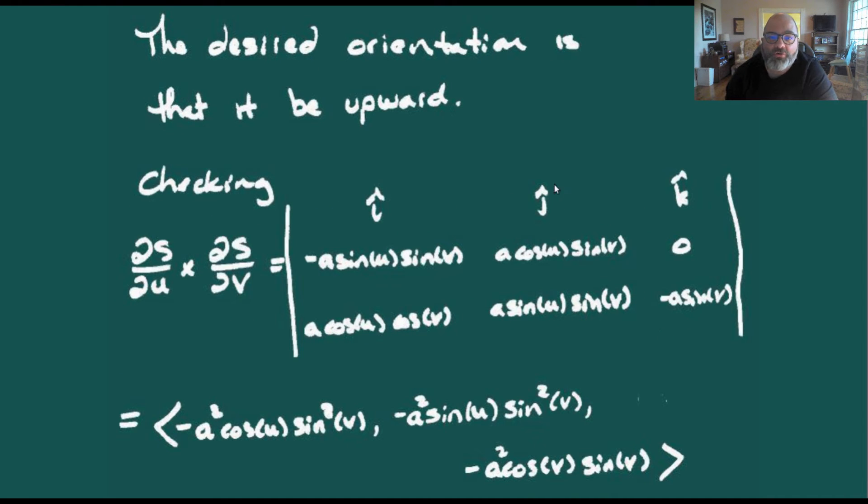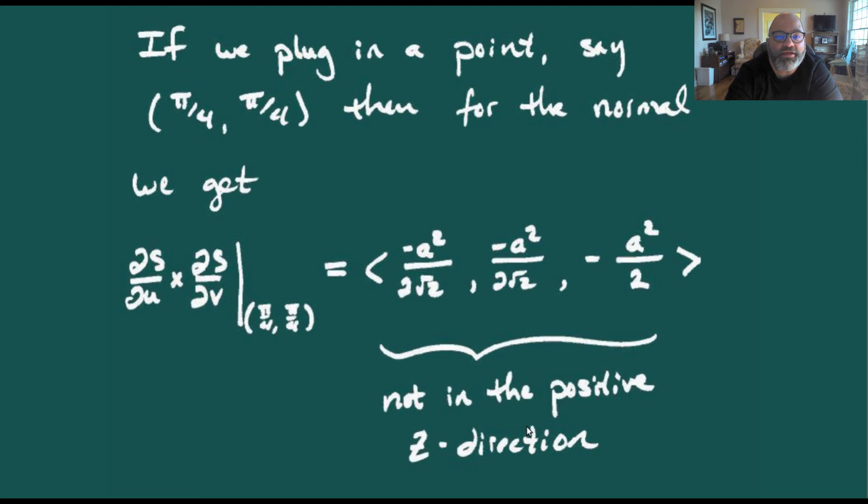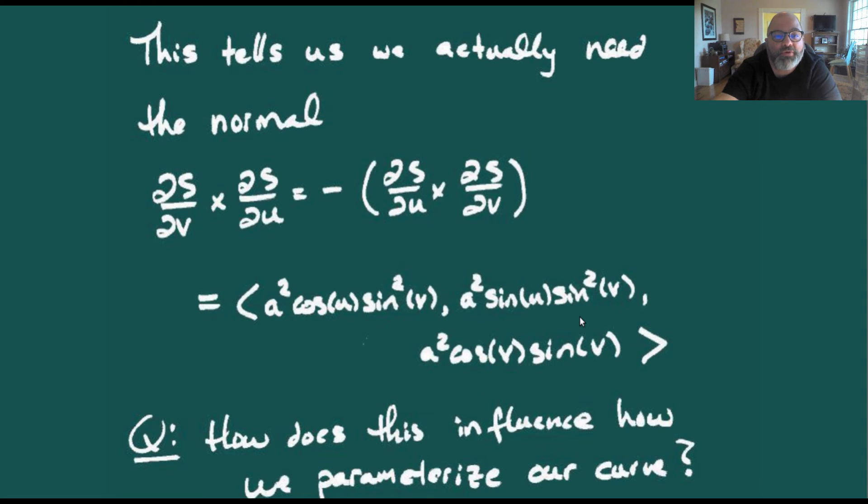We want our orientation to be upward. If we compute ∂s/∂u × ∂s/∂v, we get an expression like -a³ cos(u) sin²(v) - a² sin(u) sin²(v) - a² cos(v) sin(v). If we plug in a test point, say (π/4, π/4), and look at the normal, we see that the z component is not positive. So this is not the orientation we want for our surface.